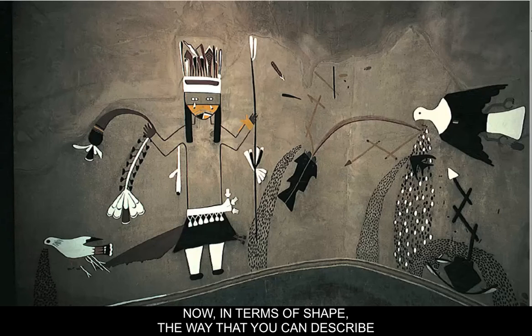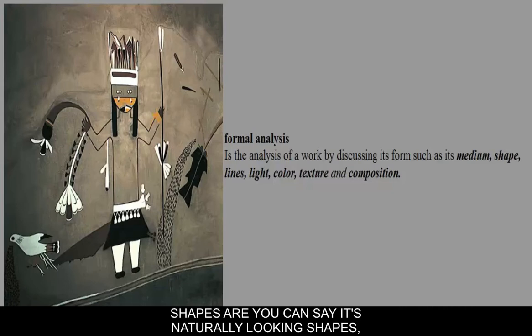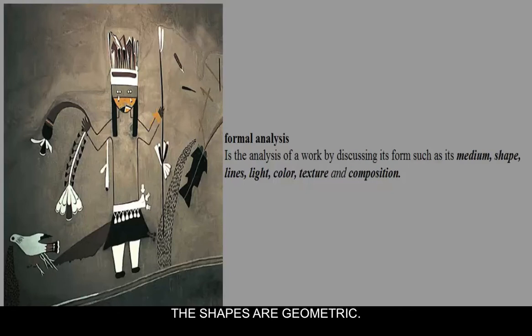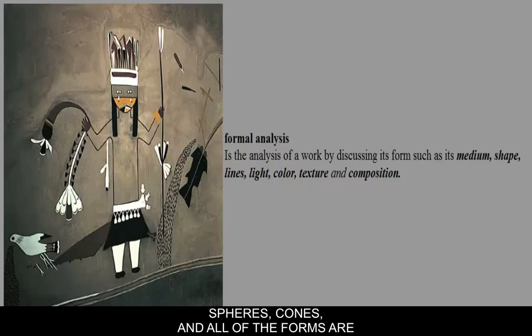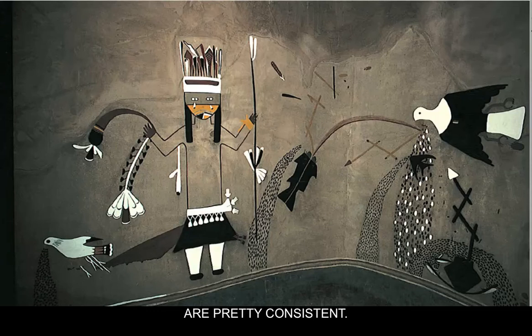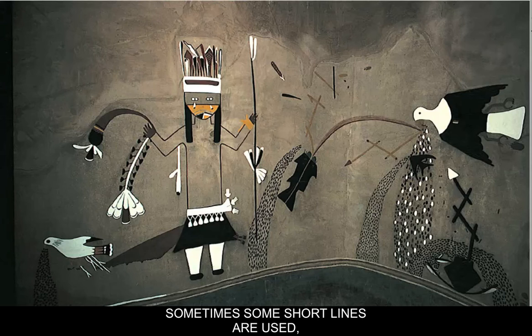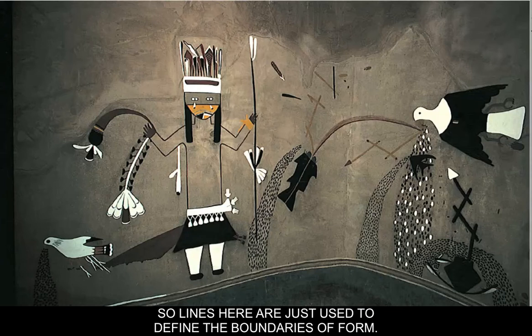In terms of shape, you can describe shapes as natural-looking or unnatural-looking, but in this instance you would say the shapes are geometric — almost like rectangles, spheres, and cones. All of the forms are outlined, so the shapes are defined by lines. The lines seem pretty consistent and don't vary a lot in thickness — they're all fairly thin lines that describe the boundaries of each form. Some short lines are used, but never to create texture; lines here are just used to define the boundaries of form.